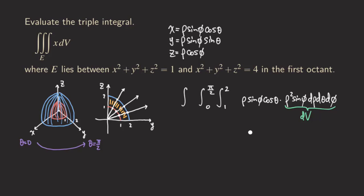For φ, we again use the side diagram. φ starts from the positive z-axis, i.e., 0. Since we are in the first octant, everything is above the xy-plane, and φ reaches π/2 at the positive y-axis. There is nothing below the xy-plane, so the limits for φ are also 0 to π/2.